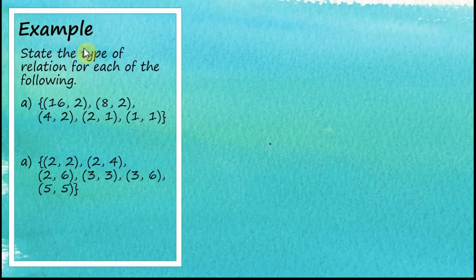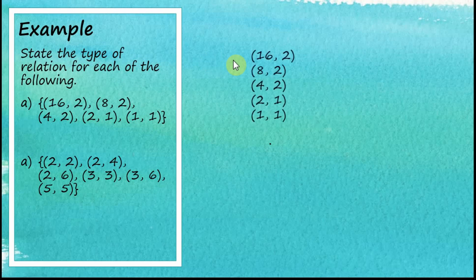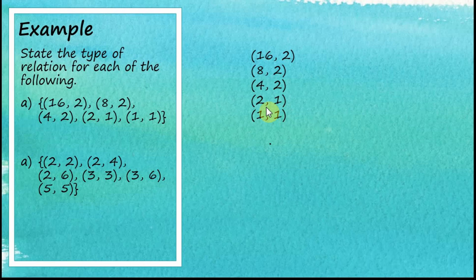Another example. State the type of relation for each of the following. This time, we are given all the pairs. Let's rewrite the pairs so we can see them clearly. From here, we can see that the objects are not repeated, but we have three objects mapped to the same image, two objects to one image, three objects to one image, two objects to one image. Therefore, this is obviously many-to-one.